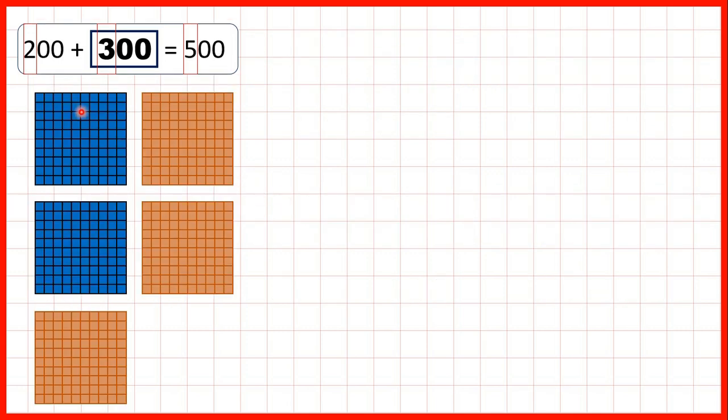Using base 10 blocks, here we can see that we start with 200, and if we add 3 hundreds blocks, that gives us 5 hundreds blocks, or 500 altogether.